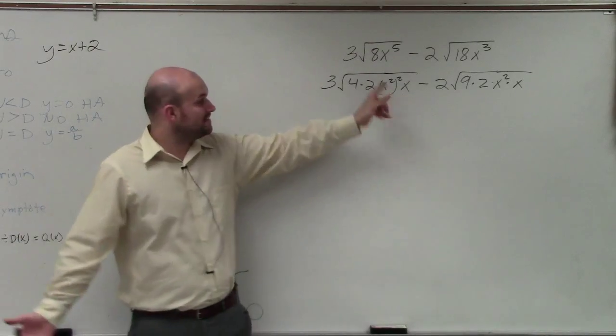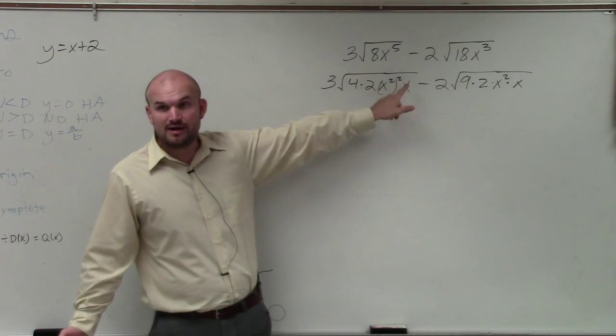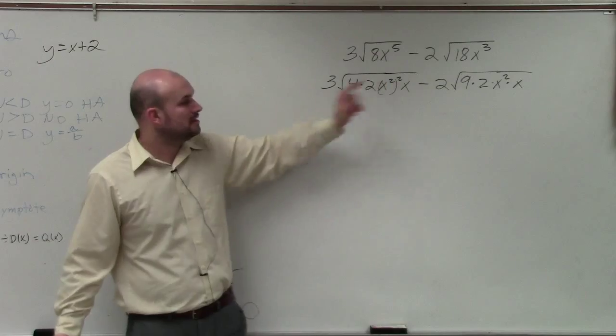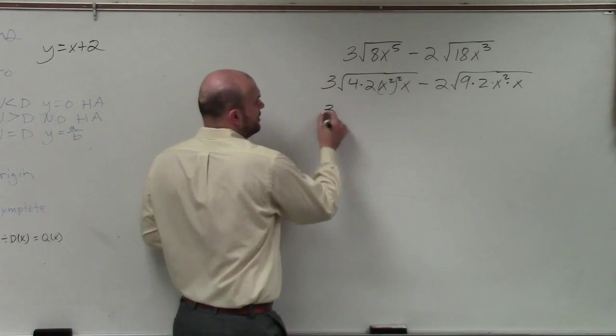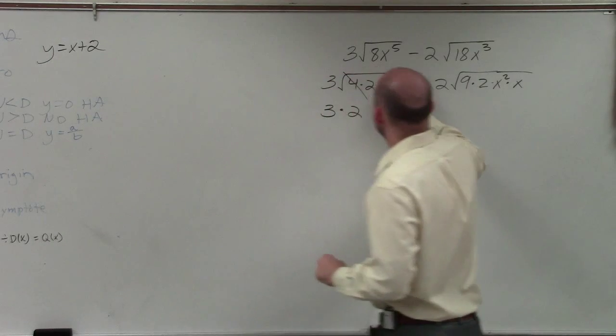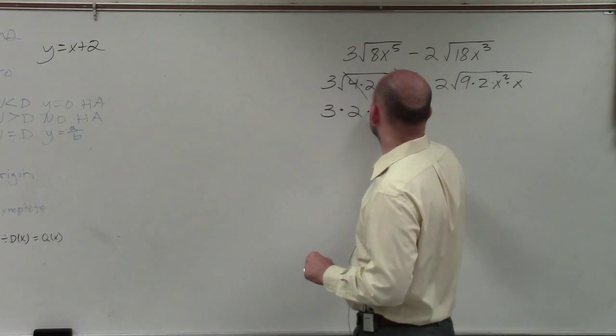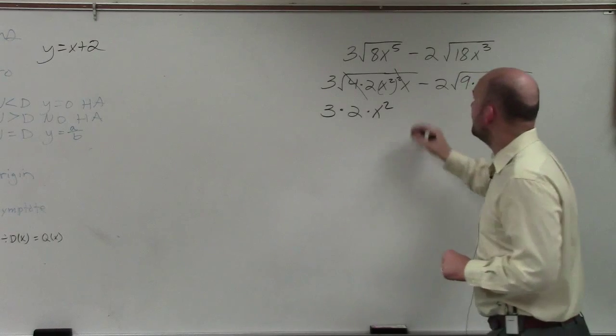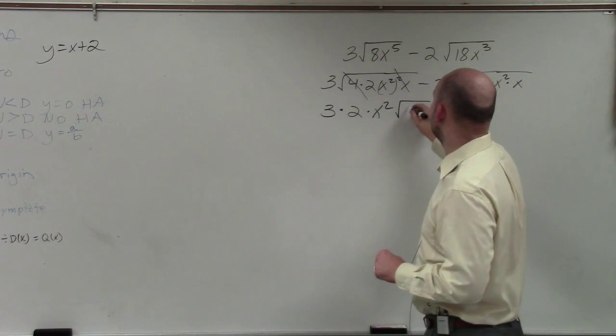Yep. But the reason why I did that is because I can now take the square root of that squared. Right, Marina? Yes? So I could take the square root of 4, which is 2. Square root of x squared squared, that's going to go out. So therefore, that's going to leave me with an x squared.